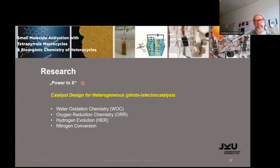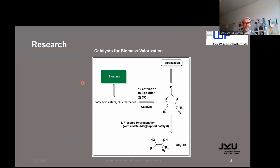Now to my research fields here at JKU. You know this 'power to X'. We synthesize catalysts for heterogeneous photo and electrocatalysis. Important fields or topics are water oxidation chemistry, oxygen reduction chemistry, hydrogen evolution. In future we might go also in the direction of nitrogen conversion. Today I will talk about CO2 activation and conversion. The second project we are doing is we synthesize catalysts for biomass valorization. We extract from biomass, for example, fatty acids, esters, oils, terpenes, and activate the CO2 and react it with epoxide.